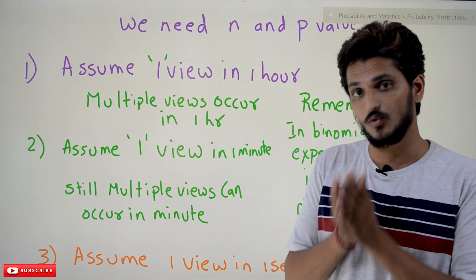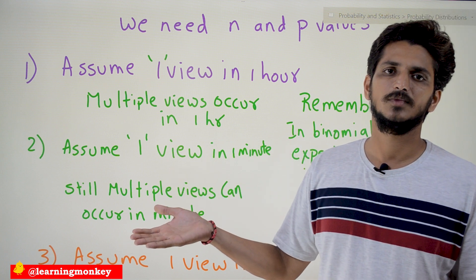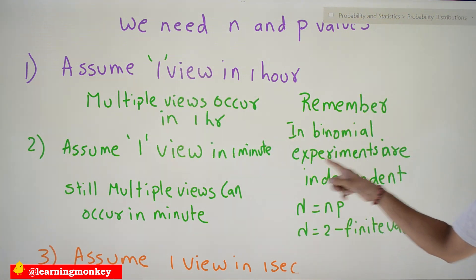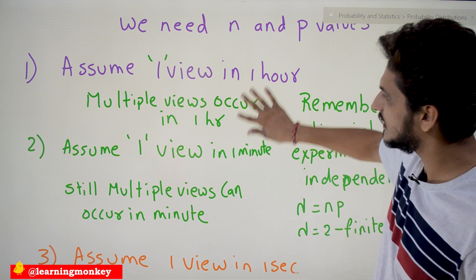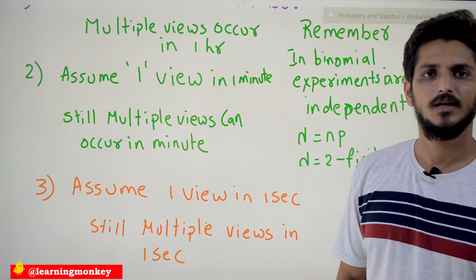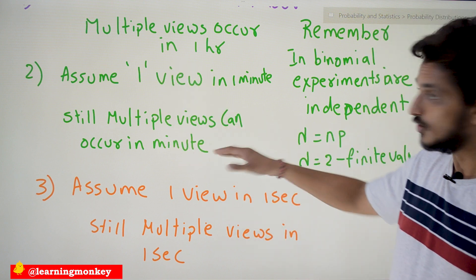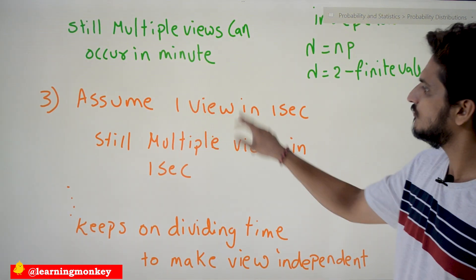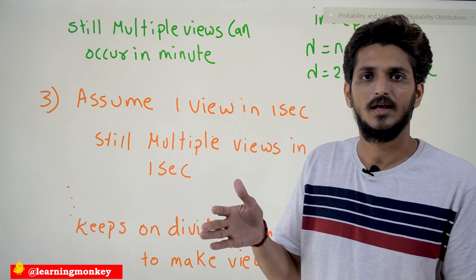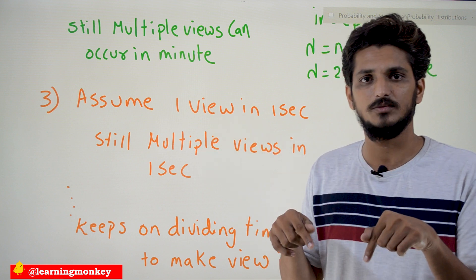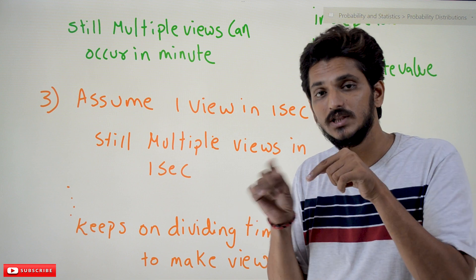But is it really possible that you are going to get only one view in one hour? No — you can get multiple views in one hour. So this assumption is not sufficient to make views independent of each other. We then divide the time further: one view in one minute, but still there is a possibility of getting multiple views in one minute. We divide further to one view in one second, but still there is a possibility of more than one view per second. We keep on dividing the time — one view in 0.001 second — and still there remains a possibility of getting more than one view in that 0.001 second.